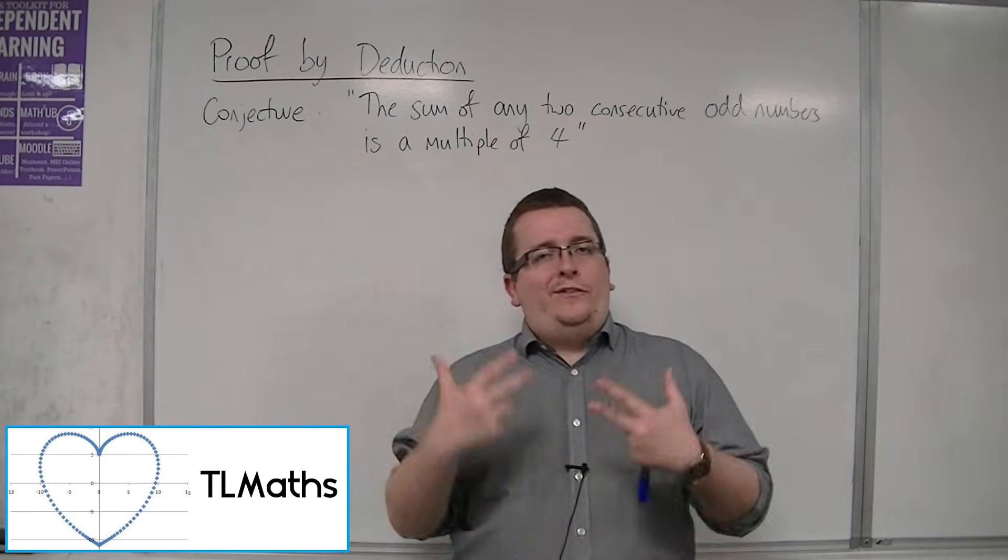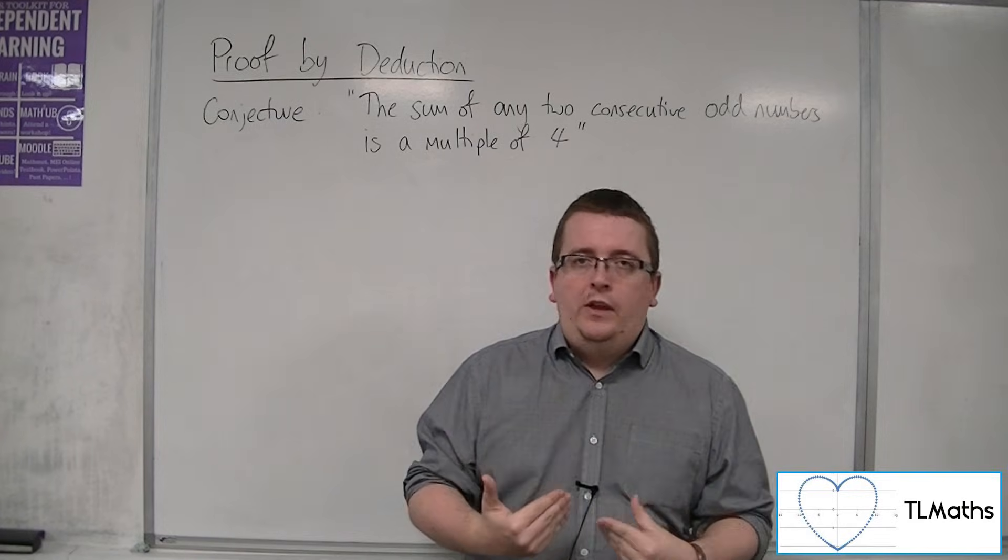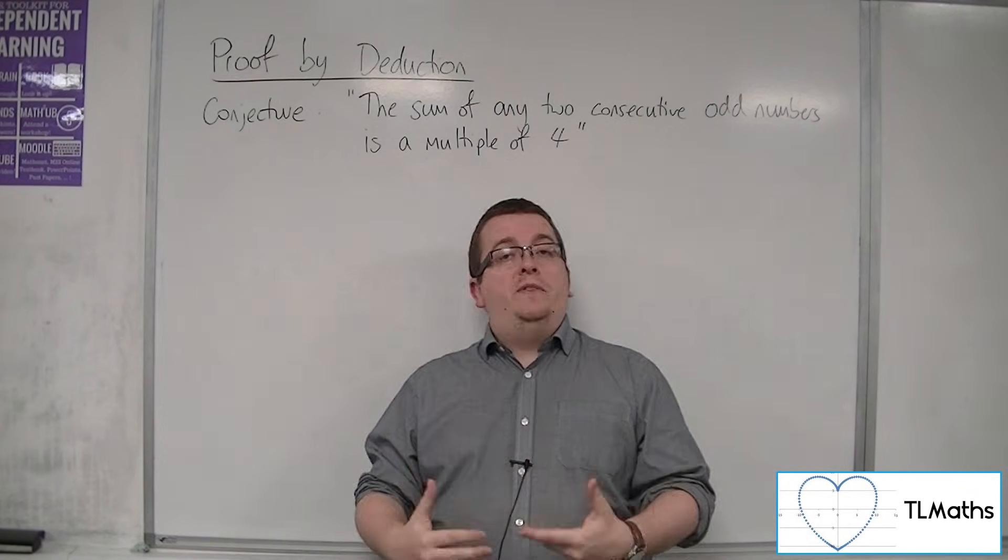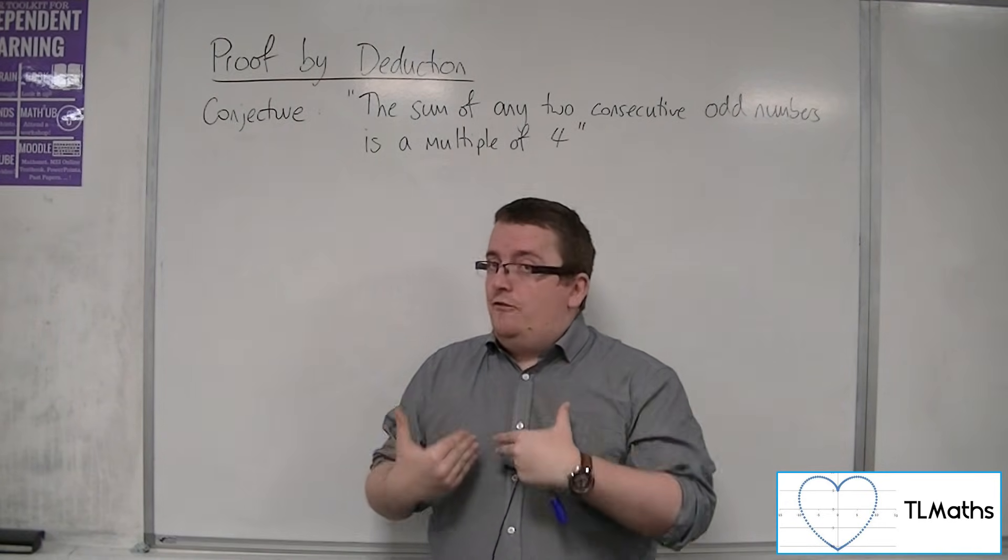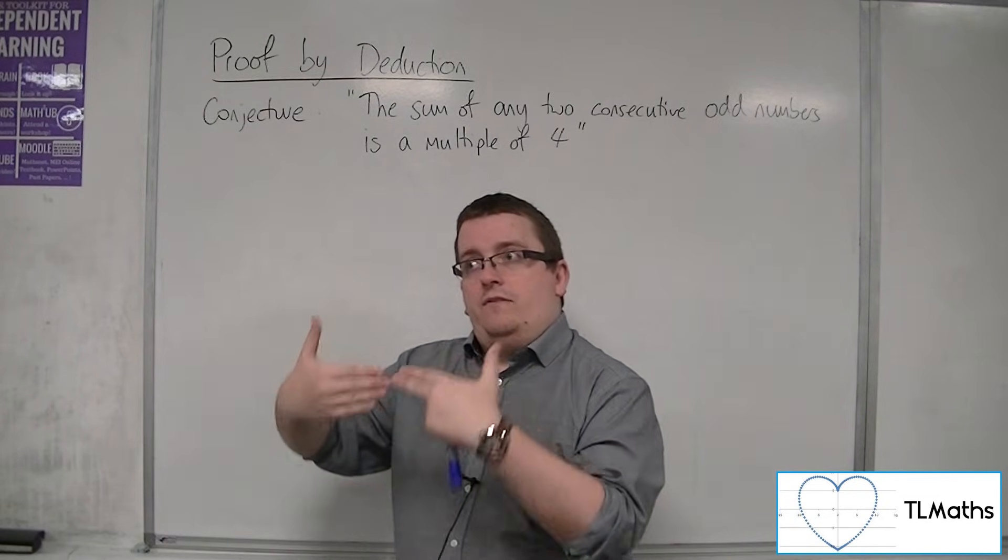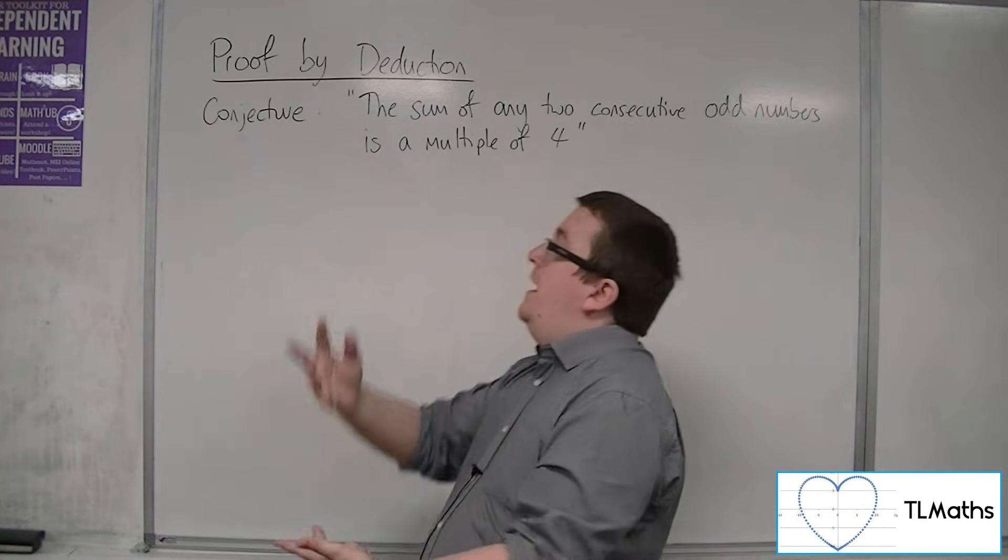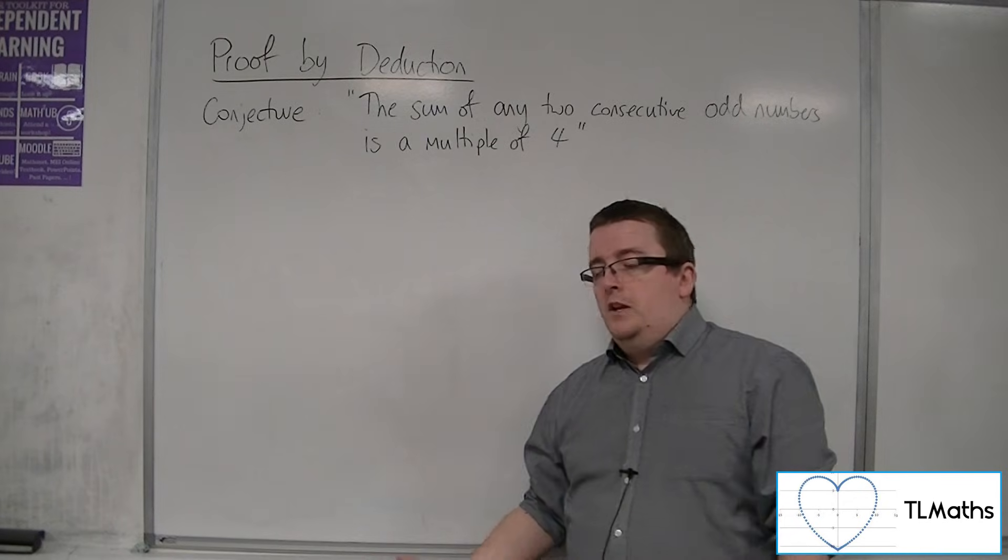Proof by deduction is all about going through a logical sequence of arguments, where you start with something that you know to be true. Subsequently, if that is true, then this next thing is true, and if that's true, then the next bit is true, and if that's true, then our conjecture is true.